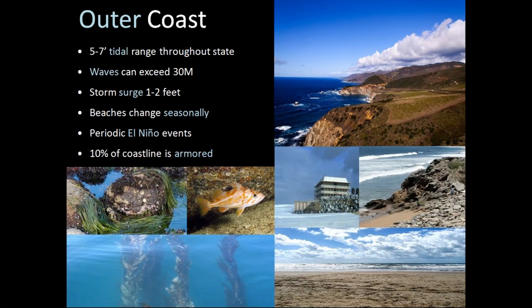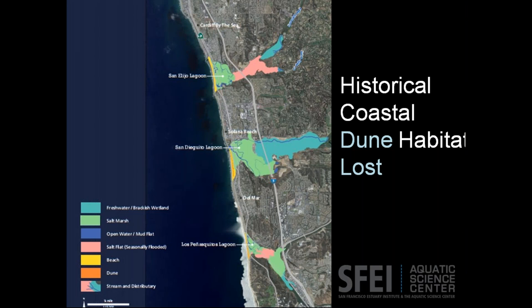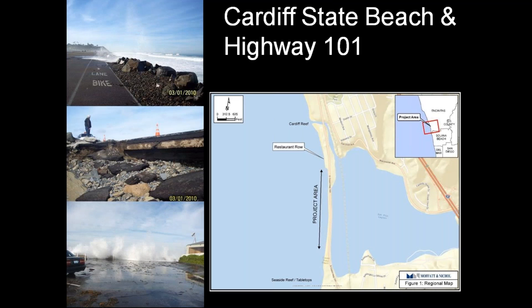Living shorelines are not a one-size-fits-all solution, and the special conditions at each site must be taken into consideration. On the outer coast, living shoreline projects are really in their infancy as it is difficult to work with high-energy systems. In California, we have a large tidal range of five to seven feet. Our waves can exceed 30 meters at times, and we can also see storm surge from one to two feet. Beach morphology changes during the wet and dry seasons, and periodic El Niño events can occur, making those changes even more dramatic. With all of that, 10 percent of our coastline is also armored. One of the highways threatening the shoreline is Highway 101 in the City of Encinitas, North County San Diego.